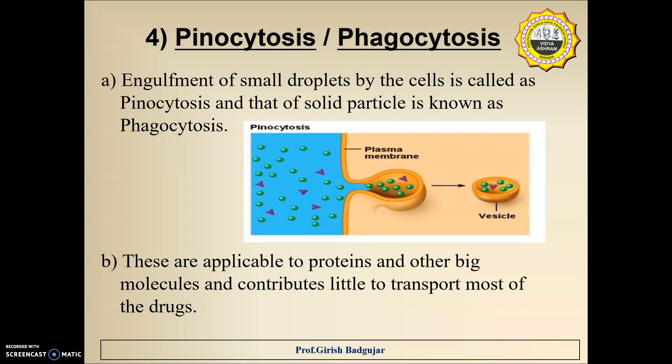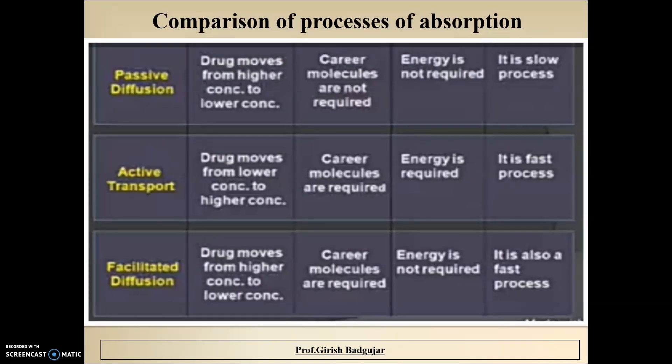Drugs can enter the blood by these four mechanisms, collectively called the processes of absorption. Here is a quick comparison: passive diffusion and active transport are exactly opposite to each other, while facilitated diffusion is somewhat similar to passive diffusion except for the need of carrier molecules.